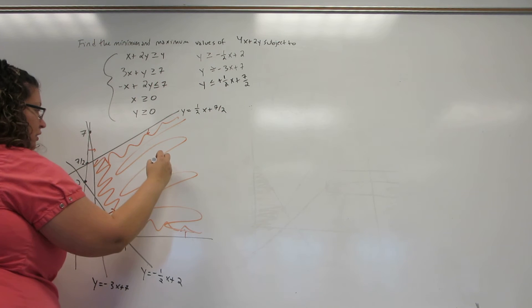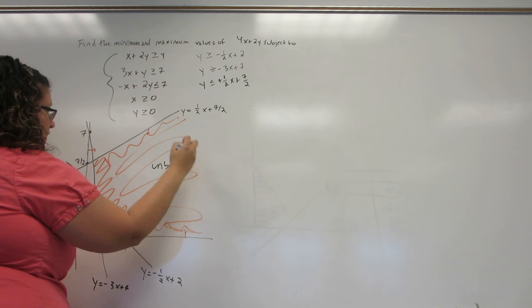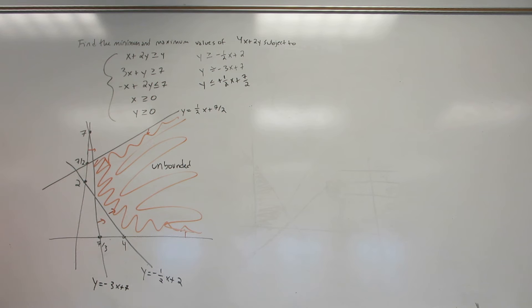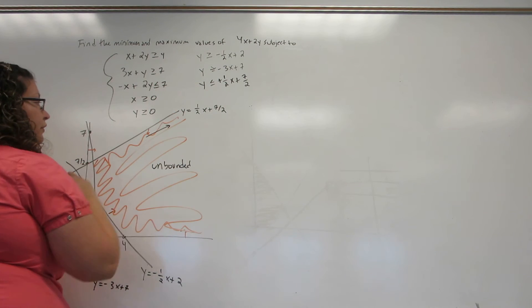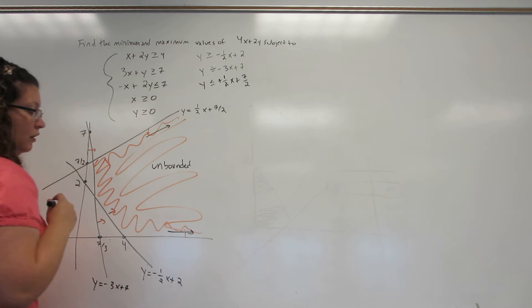This is a region that is called unbounded because it has a boundary side missing. And that's going to cause a little bit of a problem because the region will continue forever along this boundary and along this boundary. And we're going to have to deal with that.